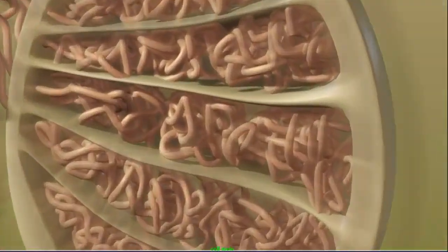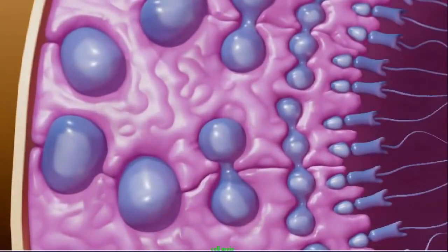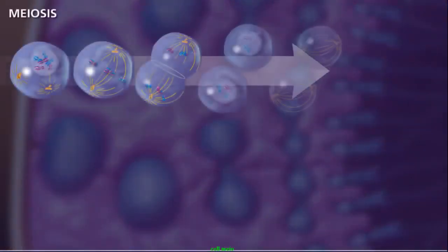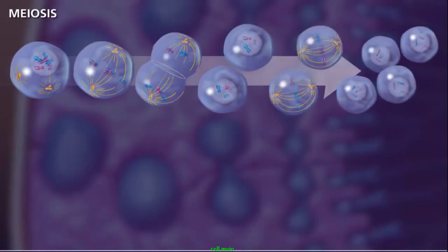Meiosis occurs in special cells called germ cells within the gonads of males and females. For the successful reduction in the number of chromosomes to occur in the new haploid daughter cells, two rounds of divisions are necessary.